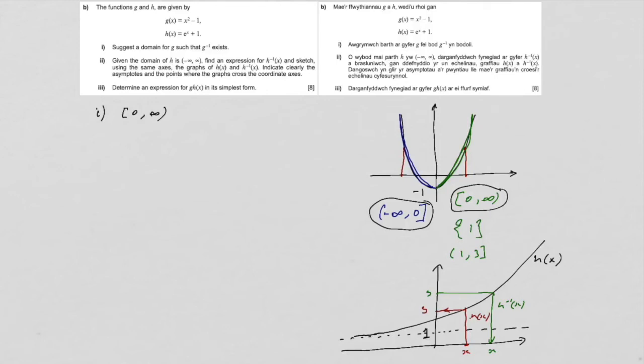So for part two, what we can do is start off by thinking about what the red one does and then undo it. So we have that H of x, which we're going to call y, is e to the x plus one.